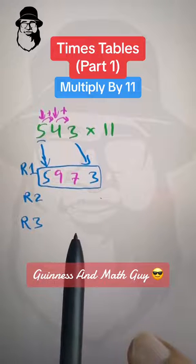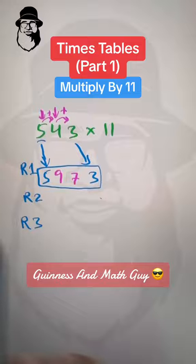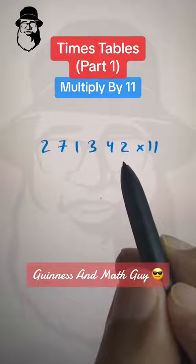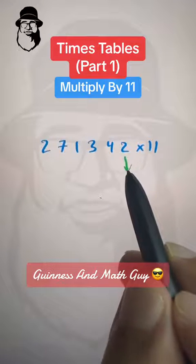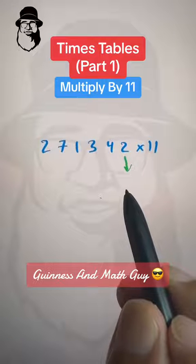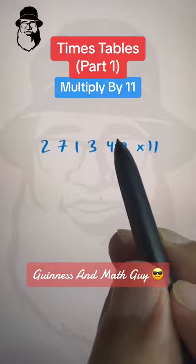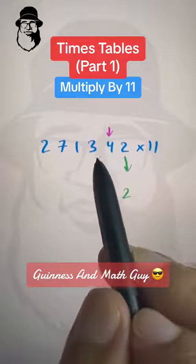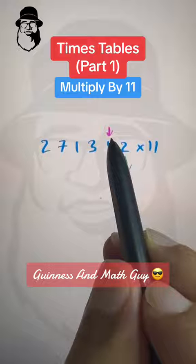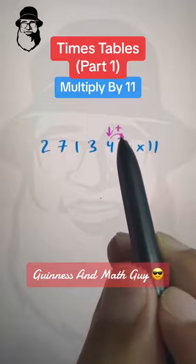Now, it doesn't matter how long the numbers are. Rule one is bring down the rightmost digit as it is. So we have 2 here in the answer. Then rule number two is we keep moving one digit at a time. And the rule is add to its neighbor.